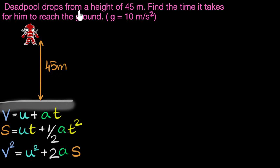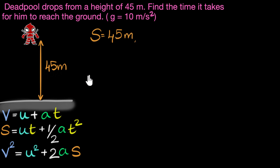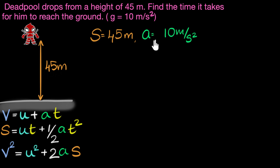It's given that Deadpool drops from a height of 45 meters, which means he's going to displace by 45 meters. So we know the displacement S is 45 meters. We also know his acceleration — 10 meters per second squared. Accelerations can be both positive and negative. Whenever objects speed up, we say their acceleration is positive. Notice Deadpool is going to speed up as he falls — he's going to go faster and faster — so we'll take acceleration to be positive.